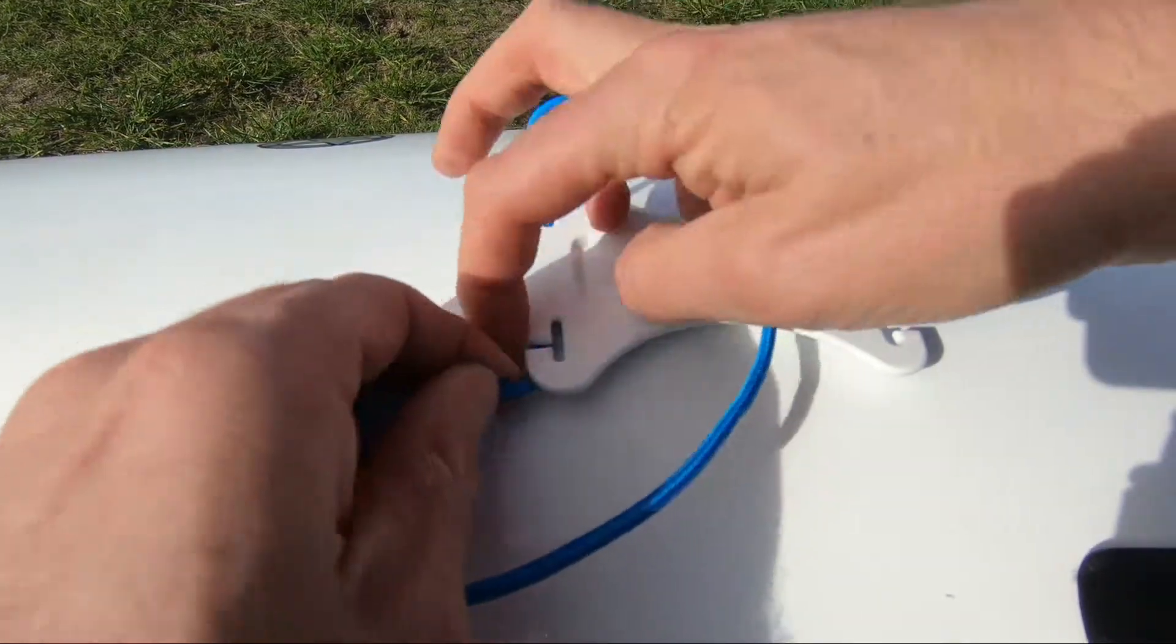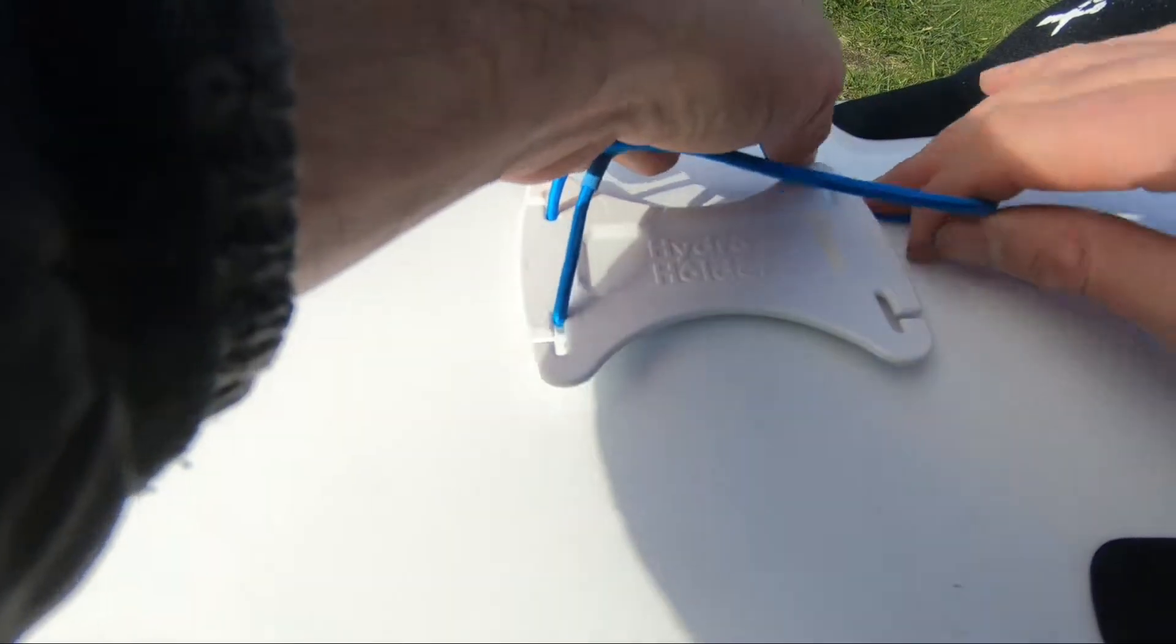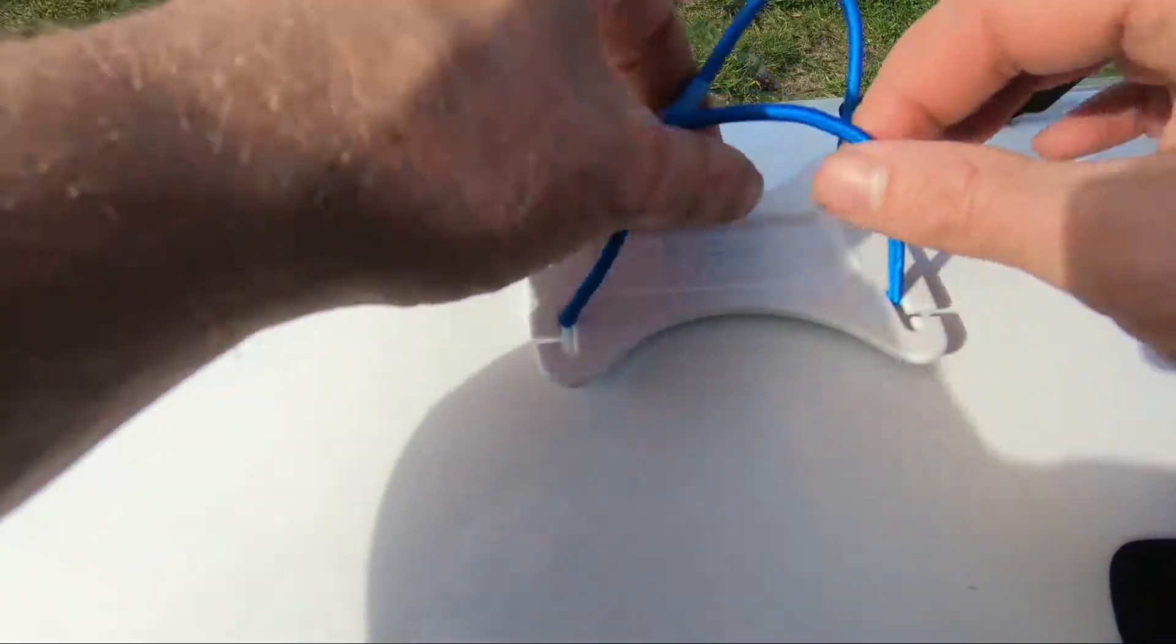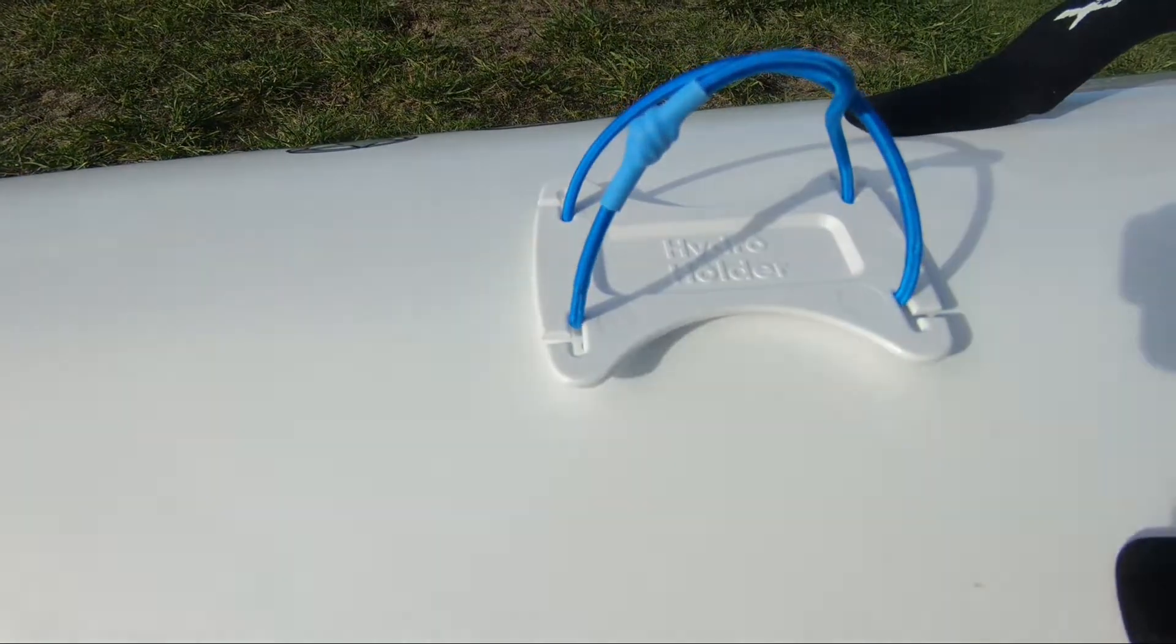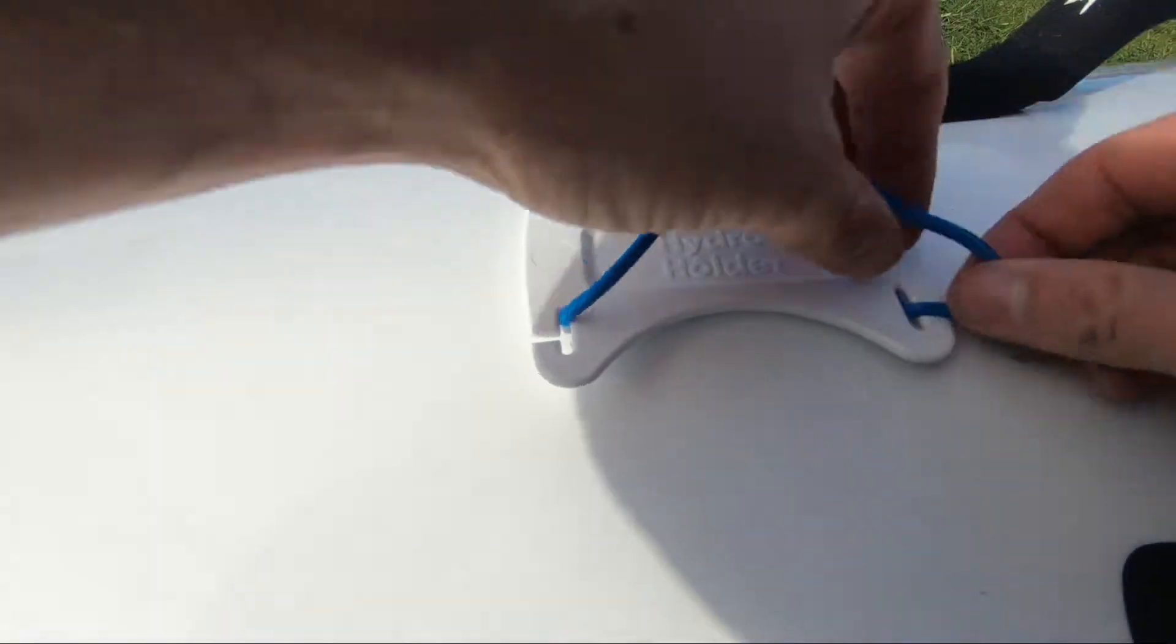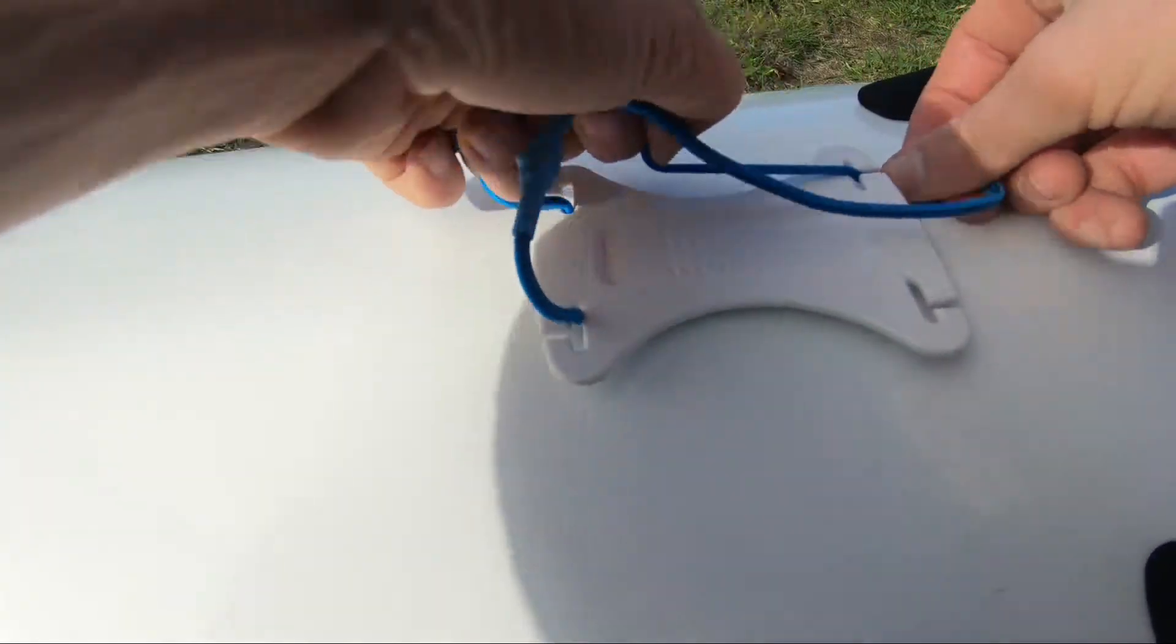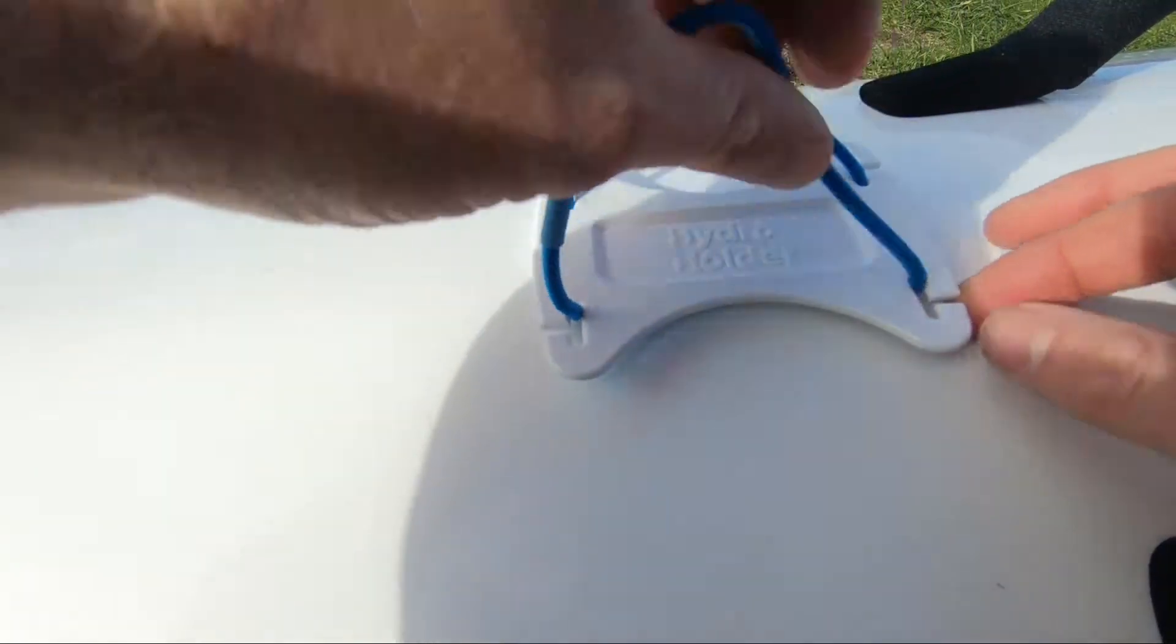And then the other way you can do it, put it in the slots there and then again you could cross it. This is maybe if you've got a larger item you need to hold, you could use that way, or again you can do it straight instead of crossed and just have it in there and in there.